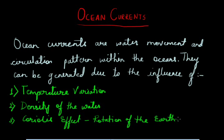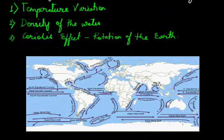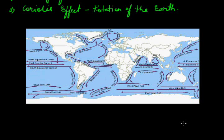These are the factors which are held responsible for the development of ocean currents. Throughout the world, we see that different kinds of ocean currents are witnessed along the continents. Majorly, these ocean currents are divided into two types on the basis of their temperature: one are called warm currents, the other are called cold currents.